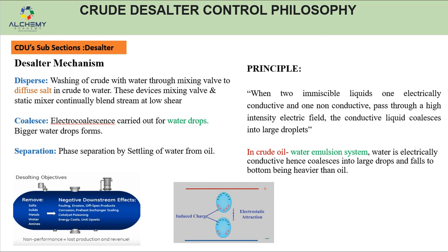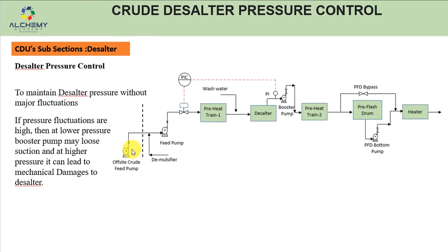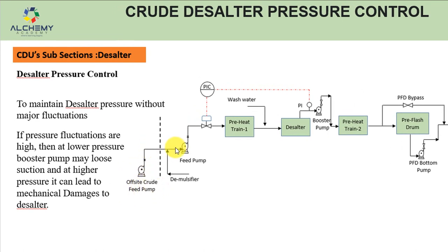The basic desalter mechanism uses three stages: disperse, coalescence, and separation. For the disperse stage, crude comes from the refinery tank farm via an offsite crude feed pump, then to the CDU unit feed pump. From the feed pump discharge it goes to the preheat train. One control valve on the feed pump discharge basically controls the desalter pressure. The preheat train heats the crude coming from the tank farm to the desalting temperature — this is important to reduce viscosity and increase fluidity so that water mixes properly.